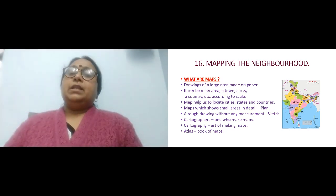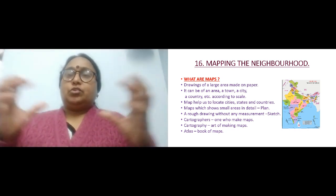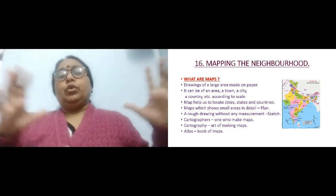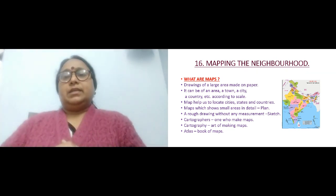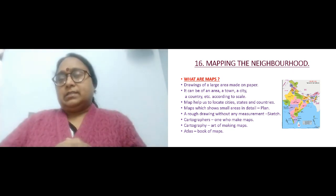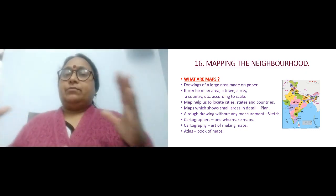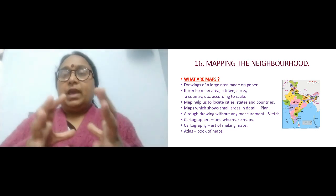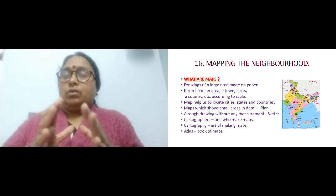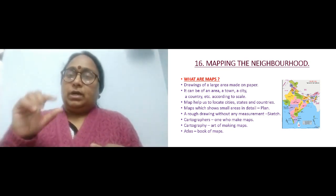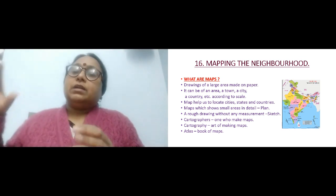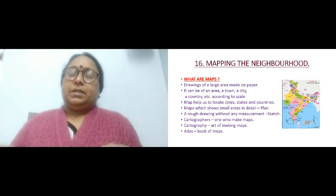A map that shows a small area in detail is called a plan. It doesn't have to be a country or state — it can be just your house. Before you construct a house you should have a plan, which shows where the house is located, which direction it faces, and where each bedroom, front room, dining hall, and kitchen is, all represented on paper and drawn to scale.